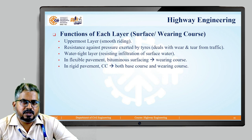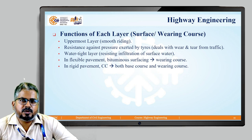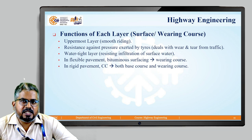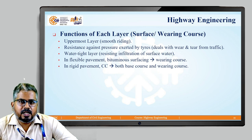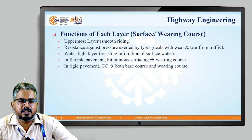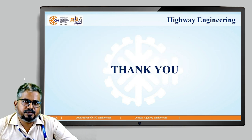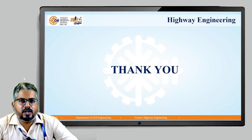The topmost layer is the surface or wearing course — the uppermost layer, provided primarily for a smoother riding experience. It provides resistance against pressure exerted by tires, dealing with wear and tear from traffic. It is a watertight layer that resists infiltration of surface water. In flexible pavement, bituminous surfacing acts as the wearing course, while in rigid pavement, the cement concrete acts as both the base course and the wearing course. In the next session, we will look into module 2.